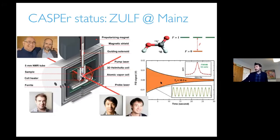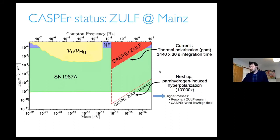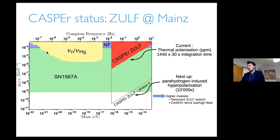CASPER has already taken some data using ZULF — zero to ultra-low field magnetometry at the University of Mainz in Germany. The ZULF constraints beat the new-force constraints, but do not yet get outside the SN1987A bounds, though they will in future. This operates at even lower frequencies down to 10⁻¹⁶. The neutron EDM experiment bounds operate down to fuzzy dark matter masses. CASPER also plans a broadband search down there in future designs.